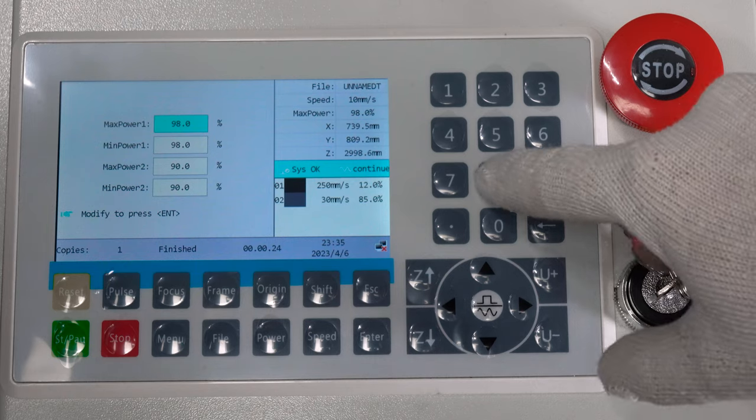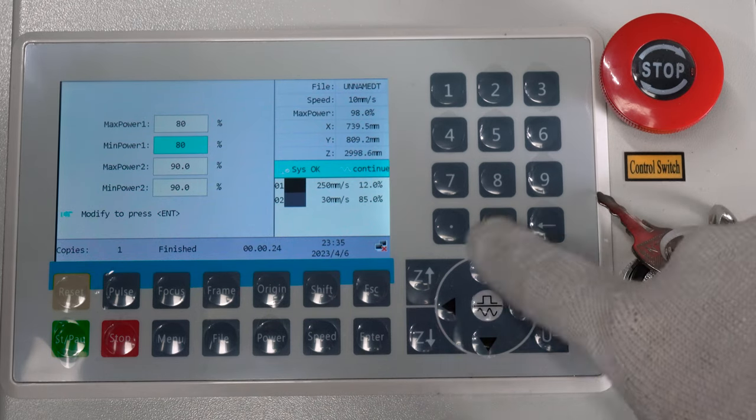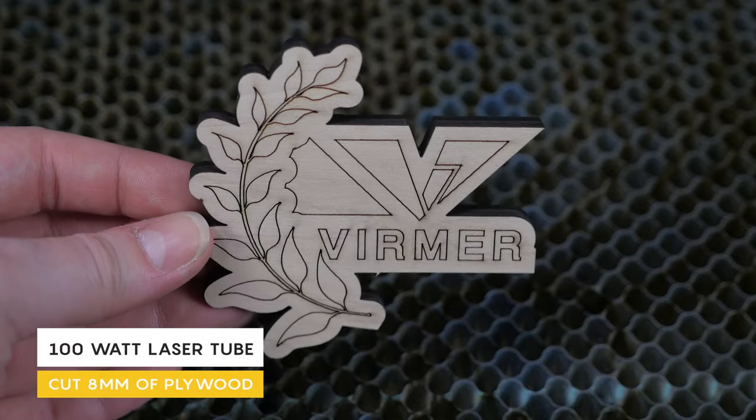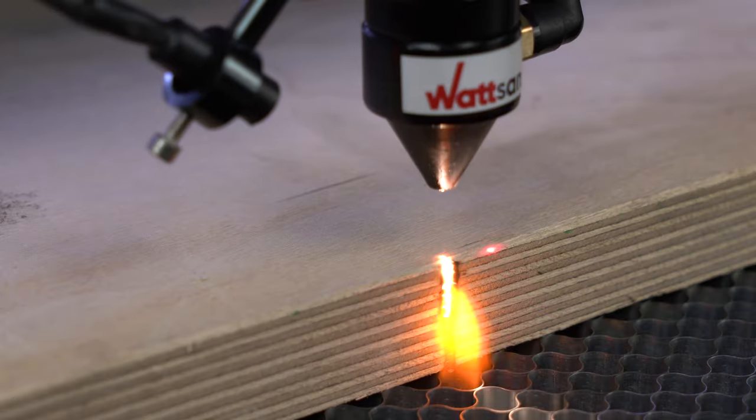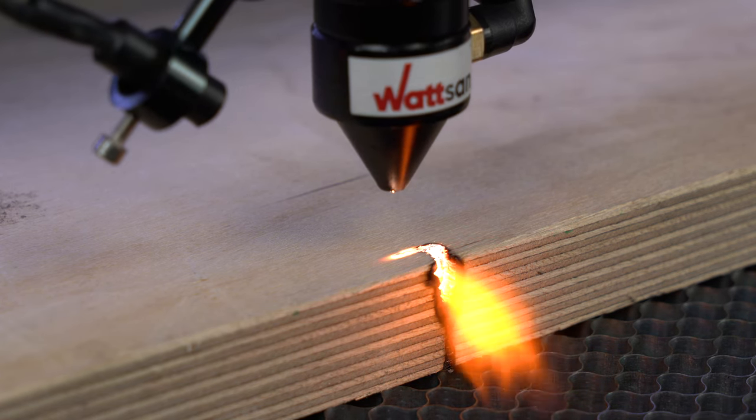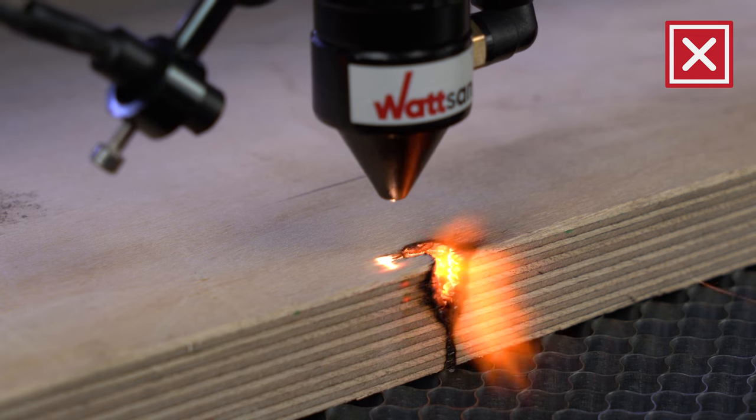Therefore, it is best to reduce the cutting power to 80%. That is, a 100 watt laser tube will effectively cut 8 mm thick plywood. Of course, a 100 watt laser tube can also cut 20 mm, but very slowly and with a lot of soot.